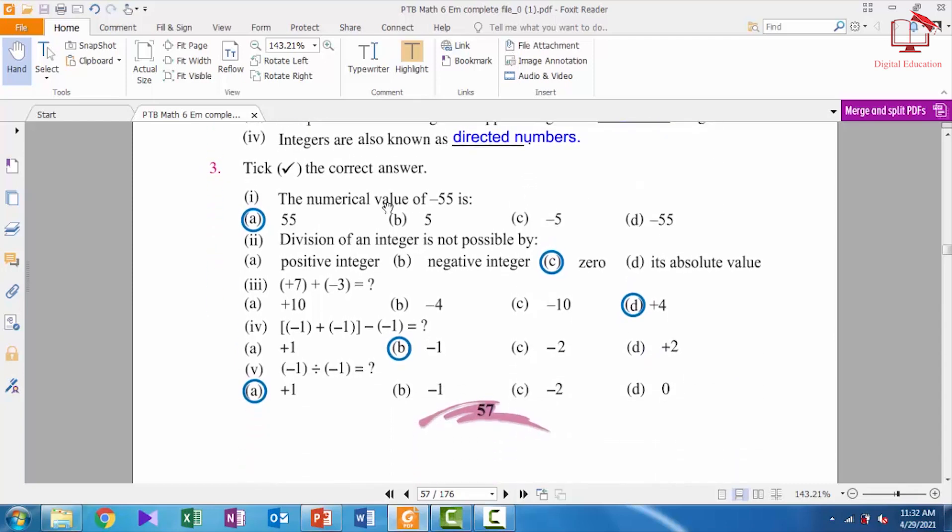Question number 3, tick the correct answer. Number 1: the numerical value of -55 is 55. Number 2: division of an integer is not possible by 0. Yes students, we cannot divide any number by 0.